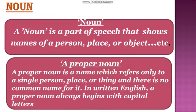So now let's revise the definition of noun and proper noun. A noun is a part of speech that shows names of a person, place, or object etc. A proper noun is a name which refers only to a single person, place, or thing and there is no common noun for it. In written English, a proper noun always begins with a capital letter.